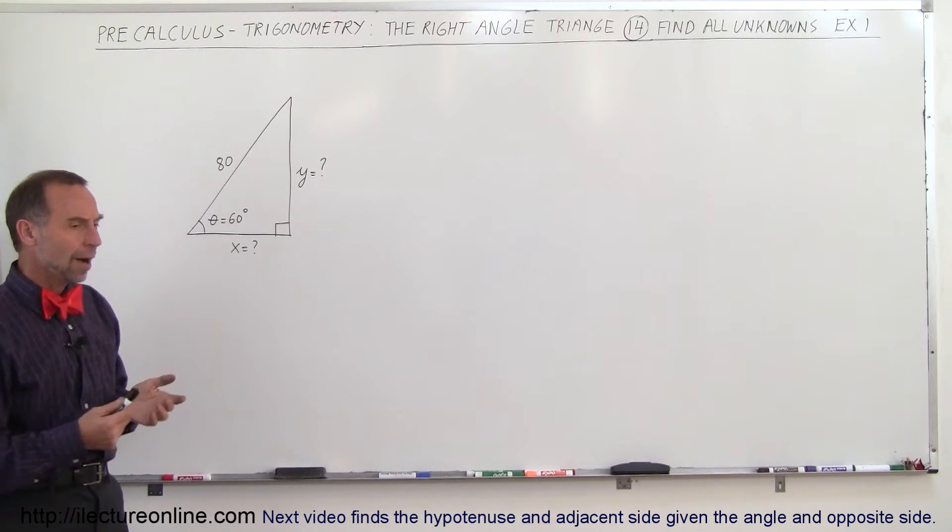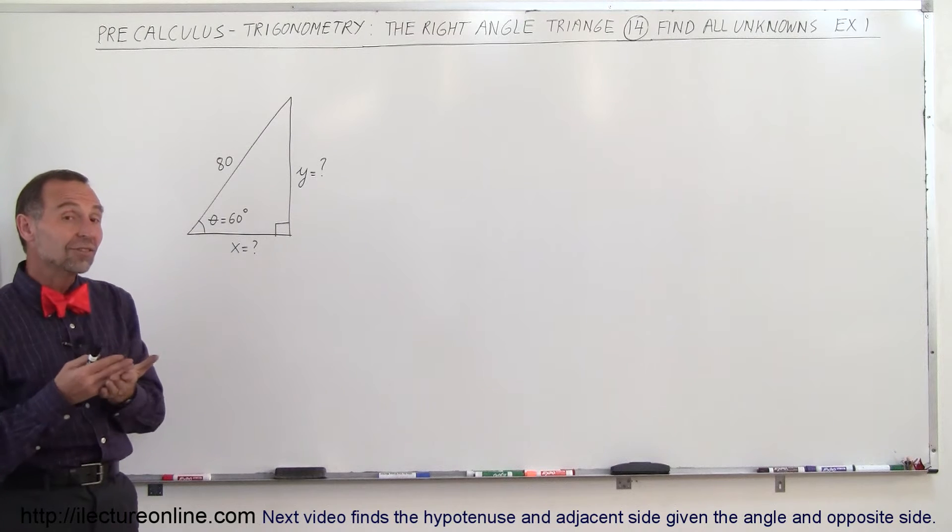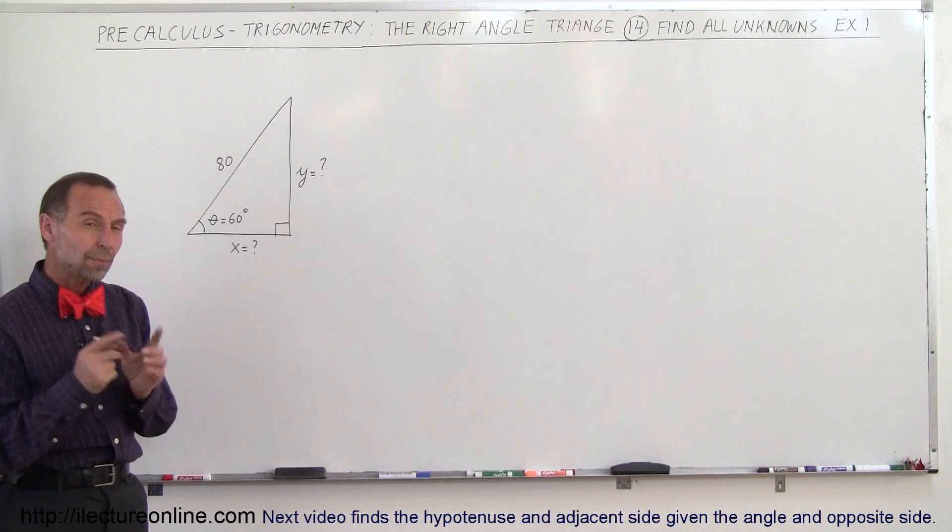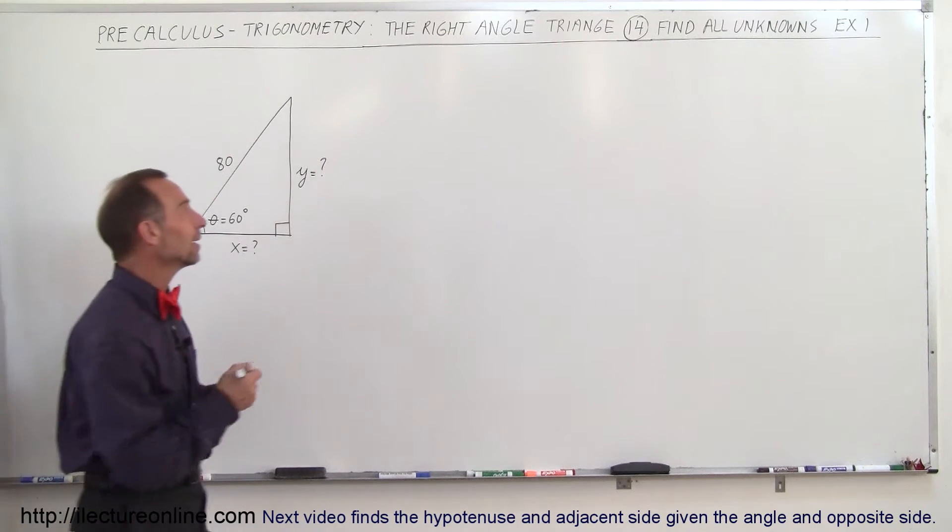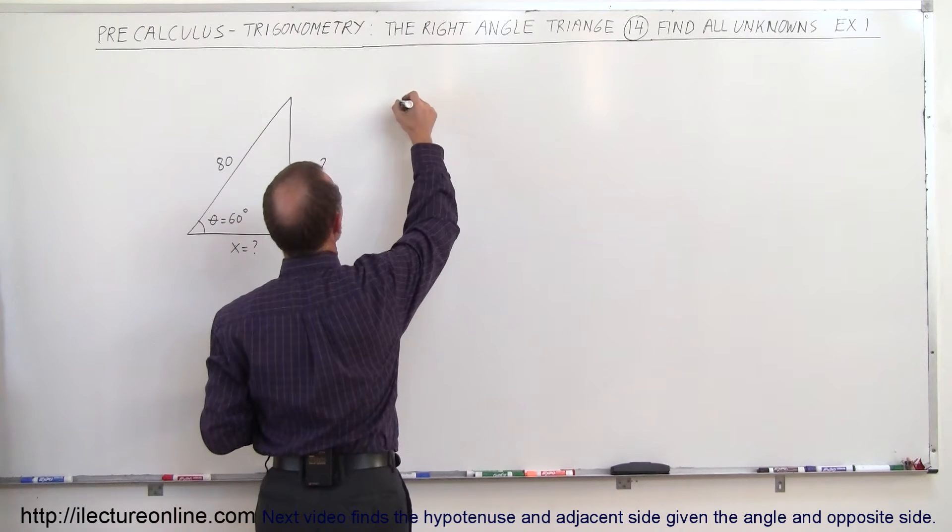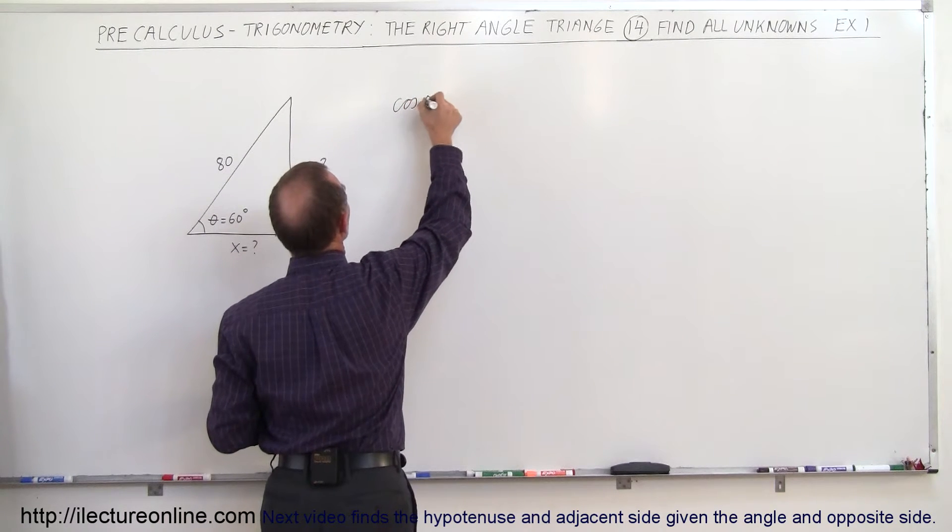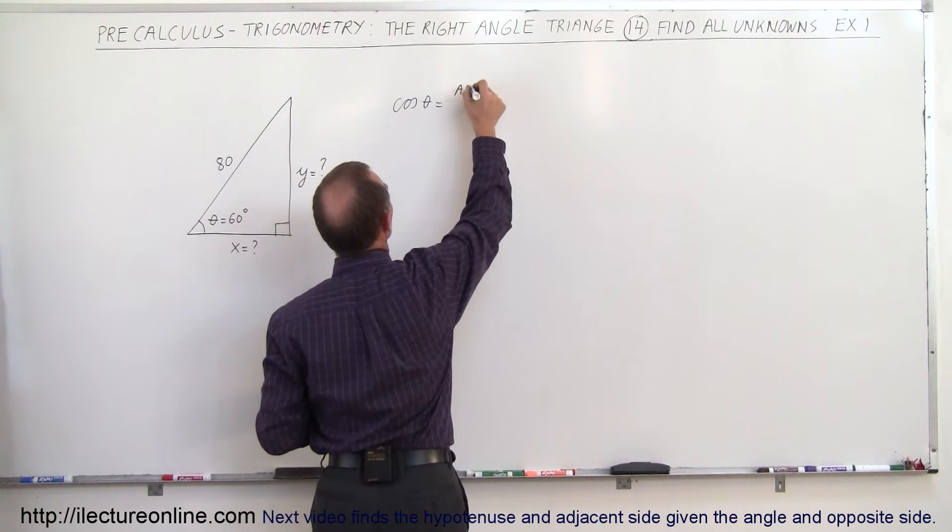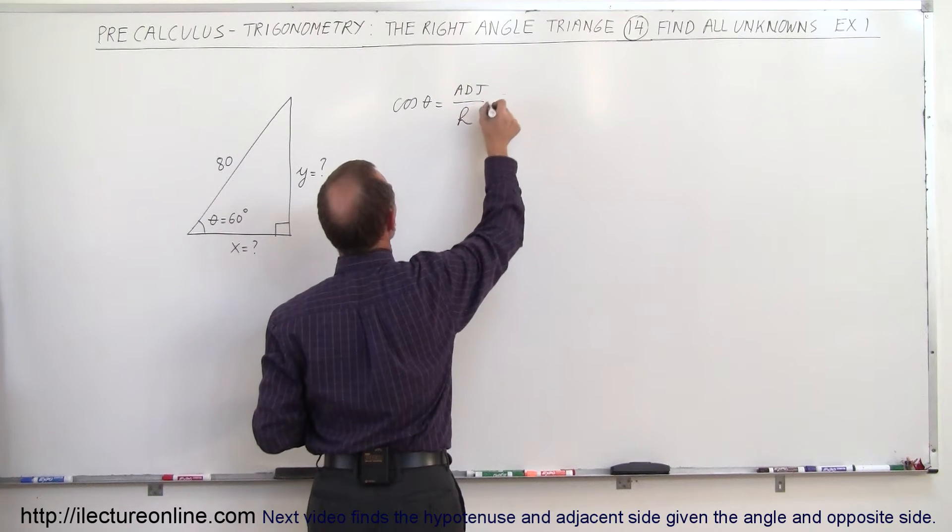So how do we find x and y? Well, since x is the adjacent side and we're given the hypotenuse, we probably want to use the cosine of theta. So we realize that the cosine of theta is defined as the adjacent side divided by the hypotenuse.